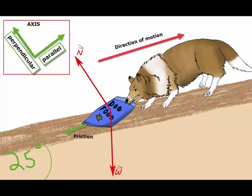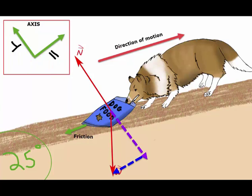The angle of the slope is 25 degrees. Because we are at an angle, we will break up the weight into its parallel and perpendicular components. Why do we need to do this?